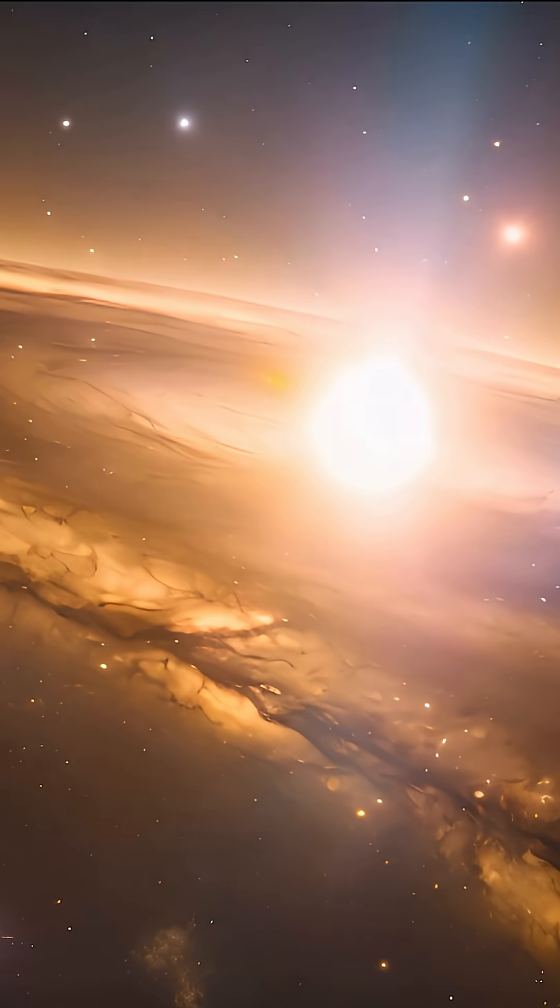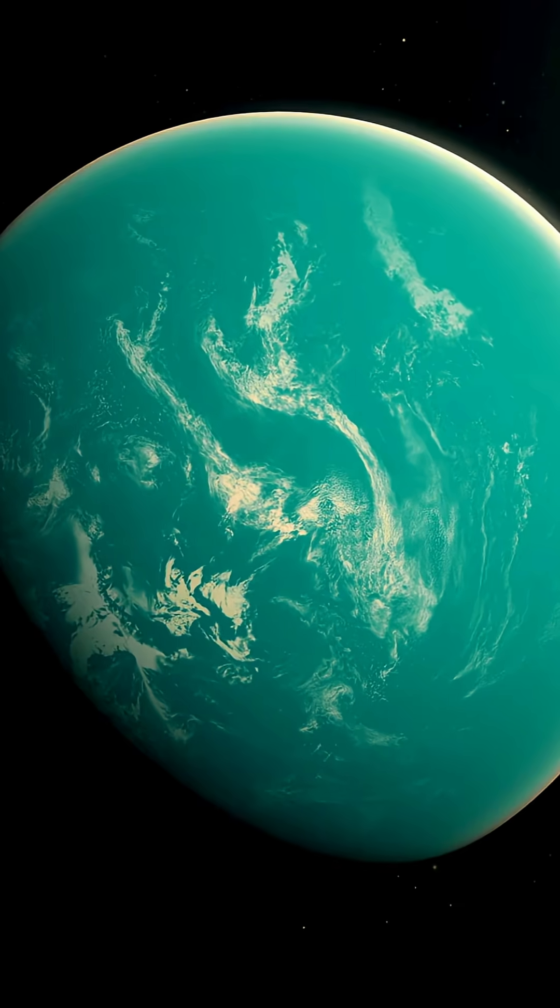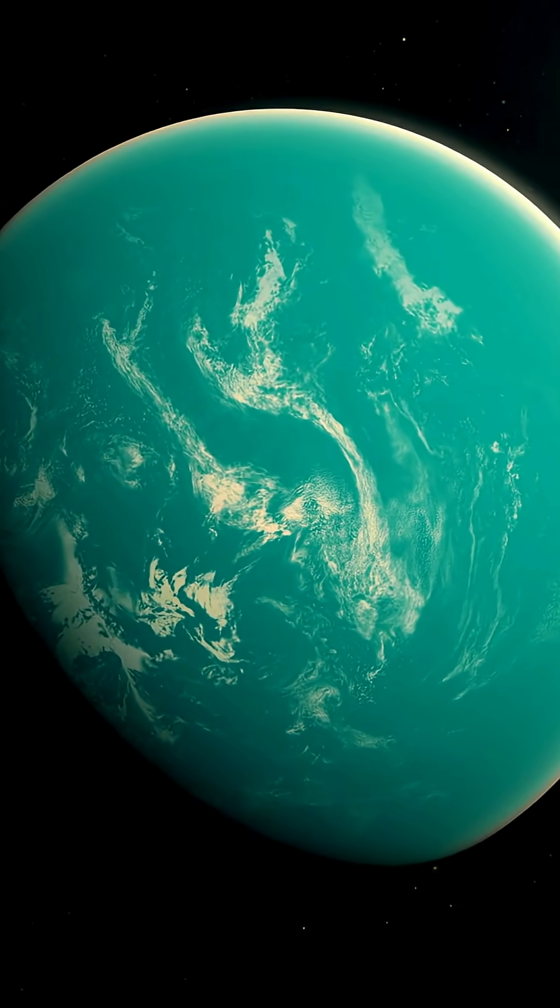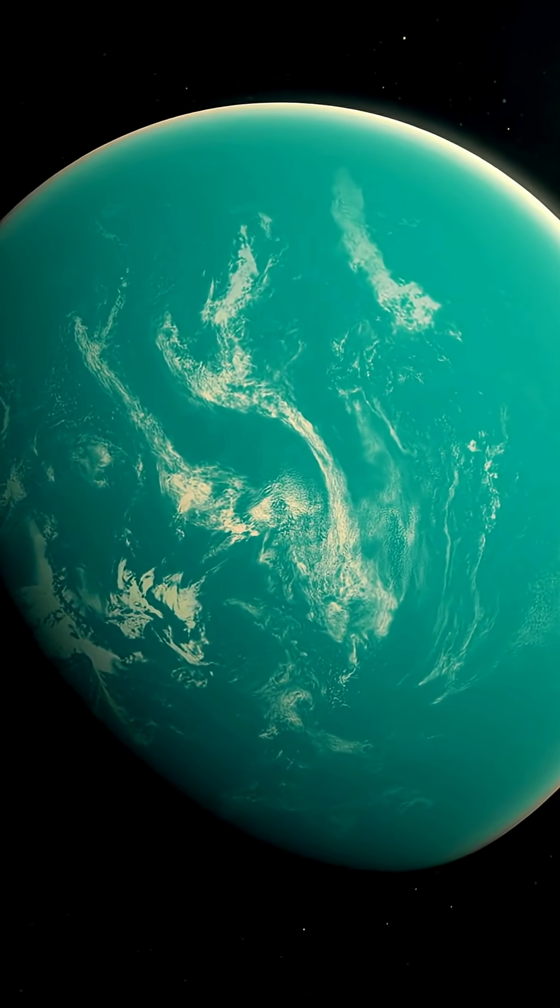A baby planet is being born in a way scientists never expected. Near the young star AB Origi, just 508 light-years away, a massive protoplanet is forming in the cold reaches of space.